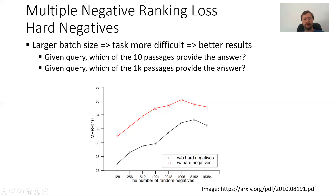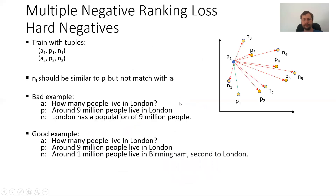MS MARCO is a well-known dataset for semantic search based on search queries from Bing. Another strategy is to use hard negatives — the black line shows performance without hard negatives and the red line with hard negatives, giving a significant performance increase. Instead of just positive pairs, we add hard negative pairs, so we have triplets: anchor A1, positive P1, and hard negative N1. The hard negative N1 should be similar to P1 but not matched with A1.